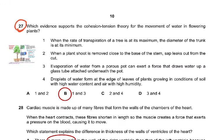Question 27: Which evidence supports the cohesion-tension theory for the movement of water in flowering plants? Option 1: when the rate of transpiration of a tree is at its maximum, the diameter of the trunk is at its minimum. Option 2: when a plant shoot is removed close to the base of the stem, sap leaks out from the cut. Option 3: evaporation of water from a porous pot can exert a force that draws water up a glass tube attached underneath the pot. Option 4: droplets of water form at the edge of leaves of plants growing in conditions of high soil water content and high air humidity. So which evidence supports the cohesion-tension theory?